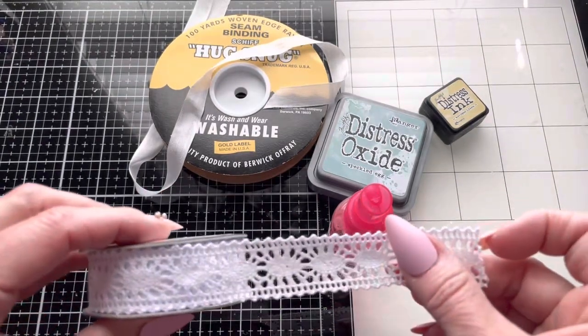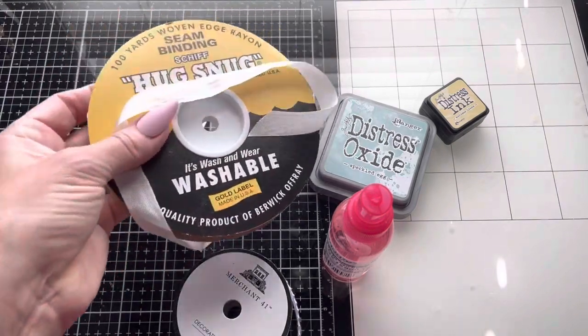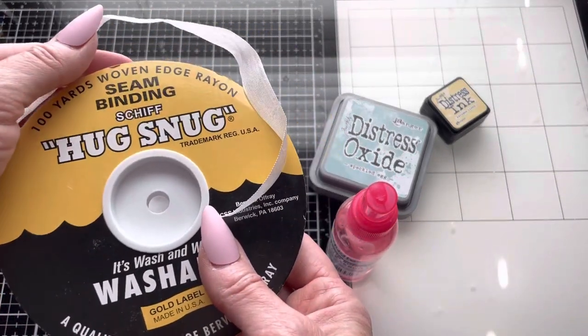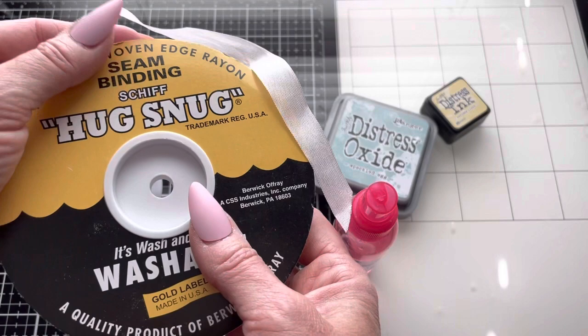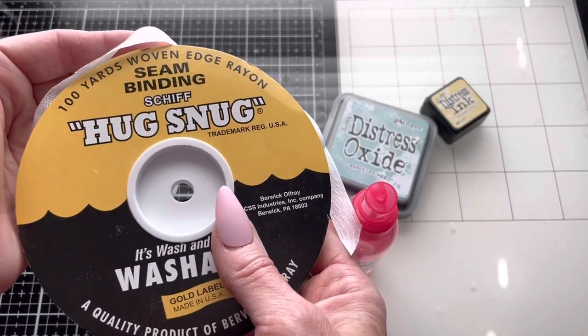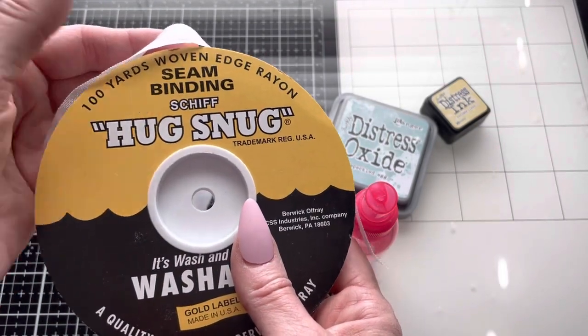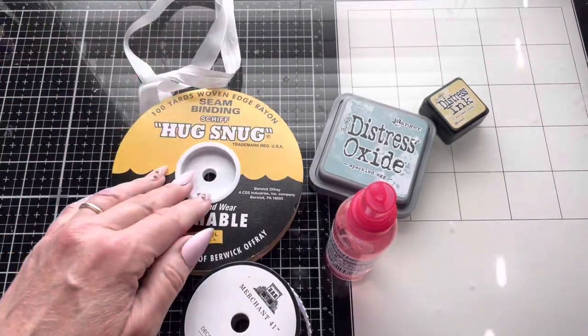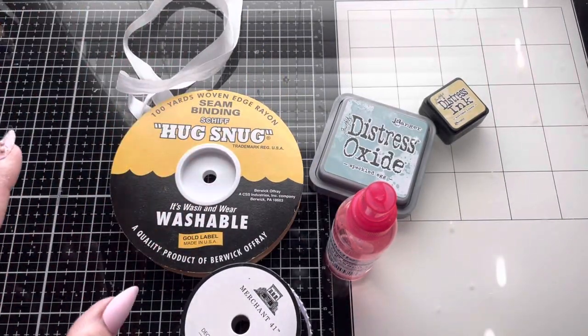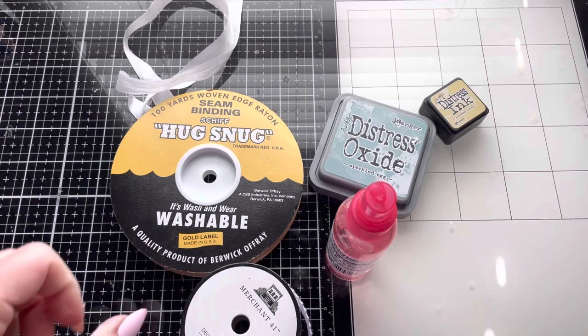This is lace I buy at Hobby Lobby. This is the Hug Snug seam binding I get off Amazon—I've never been able to find it anywhere else. You could also use white silk if you can find that, though that's tougher to find.